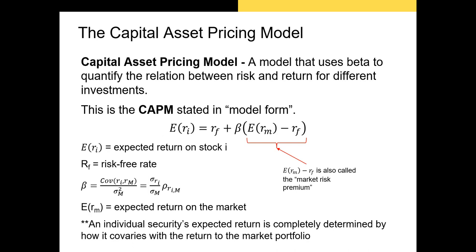The capital asset pricing model, or CAPM for short, is extremely important. This model uses beta to quantify the relationship between risk and return for different investments. You're looking at the model form of the CAPM right now. We use this form to predict the expected return on a stock. To do this we take the risk-free rate plus the stock's beta times the quantity of the expected return on the market minus the risk-free rate. That quantity is also referred to as the market risk premium.